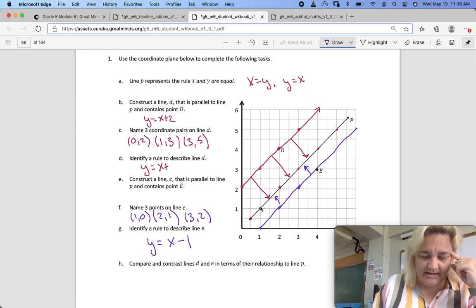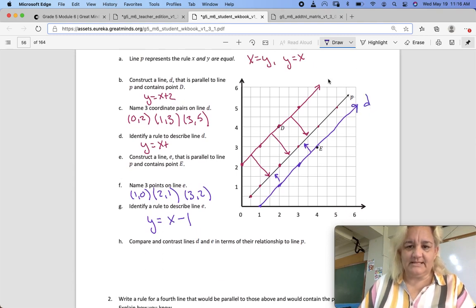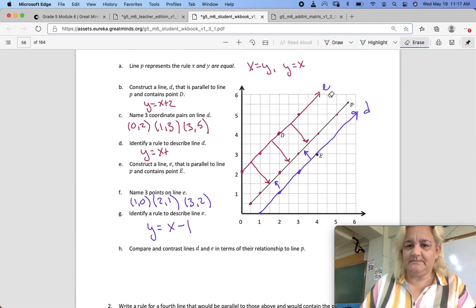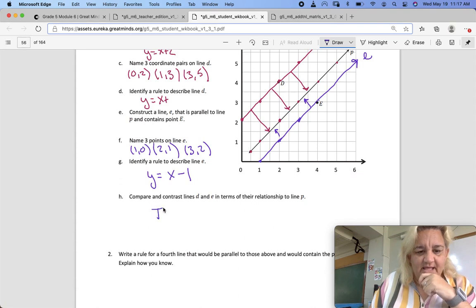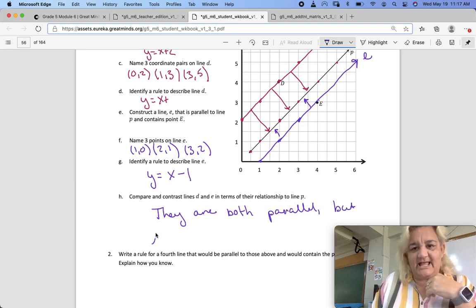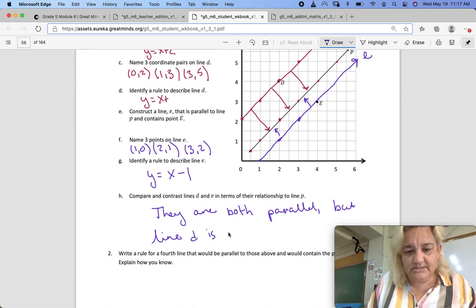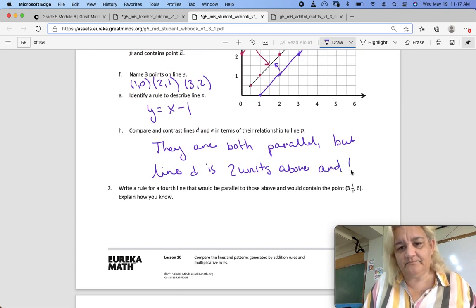Let's try Y equals X minus 1. Does that work? If we had 1, 1, now we have 1, 0. 2 minus 1 would be 1. So 2, 1. 3, 2, 4, 3. Compare and contrast line D and E in terms of their relationship to line P. They are both parallel.